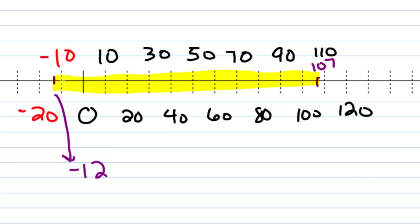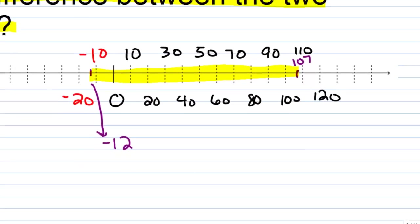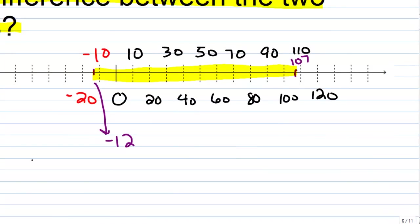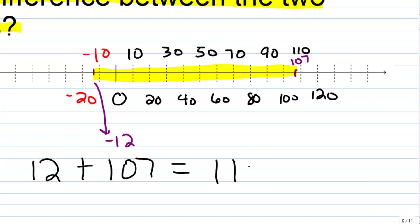To find the difference, I need to go from negative 12 to zero on the number line — that's a movement of 12 units. And then I need to go from zero to 107 on the number line — that's a movement of 107 units. So when I add these two amounts together, I get 119. Using a number line, I can see that's the difference between those two values.